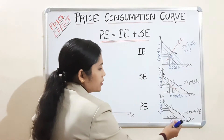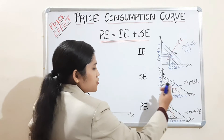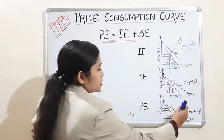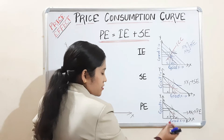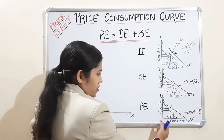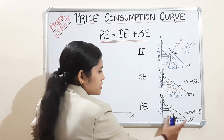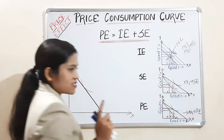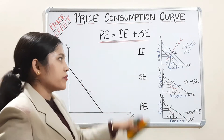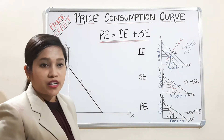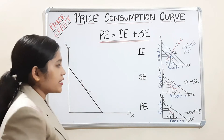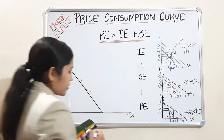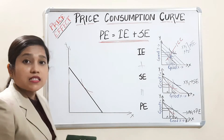Lastly, the price effect: when the price of one commodity declines, the budget line rotates outward and consumption increases. Due to this decrease in price, the change in consumption pattern, XX1, is called the price effect. This is a brief introduction to these two effects. Now we will study how price effect equals income effect plus substitution effect.